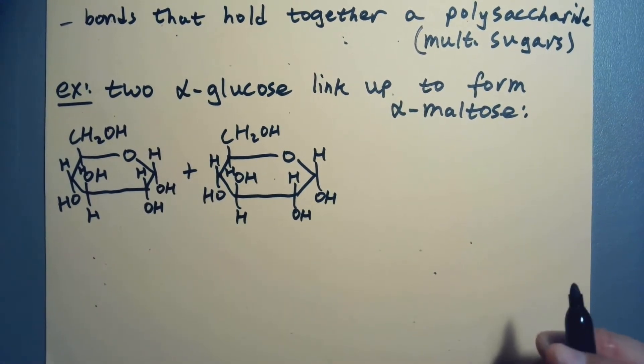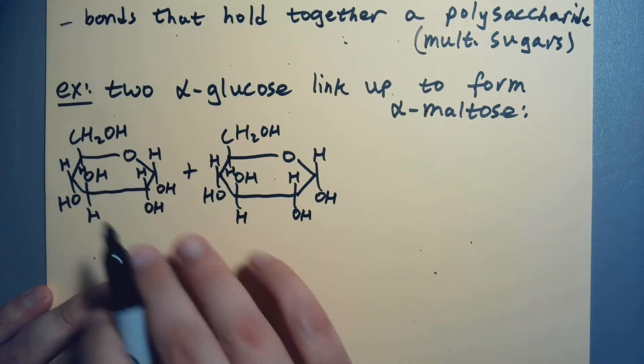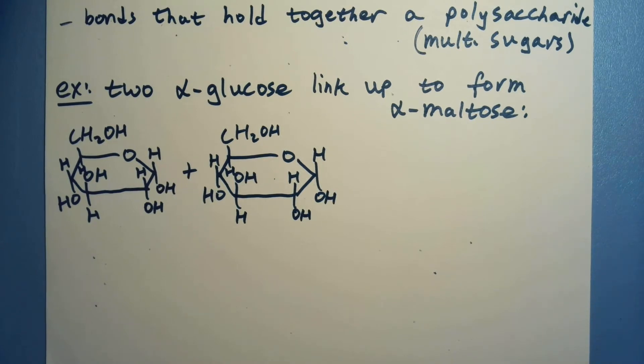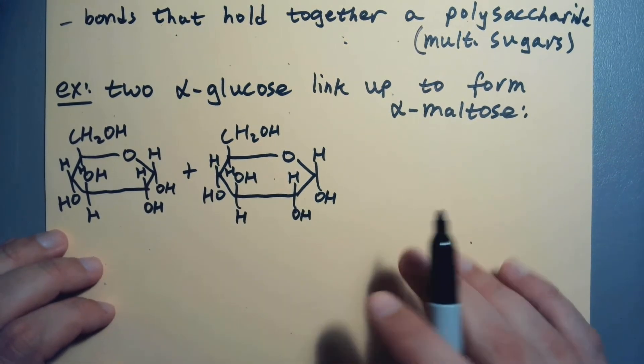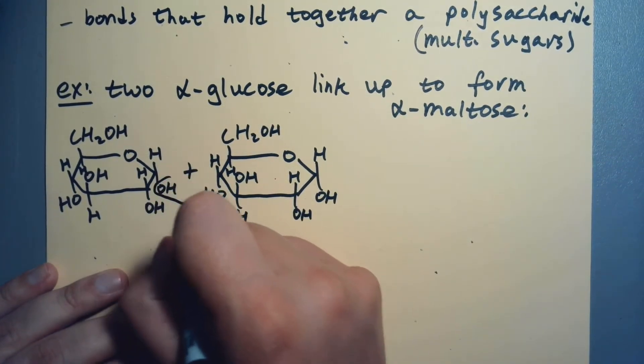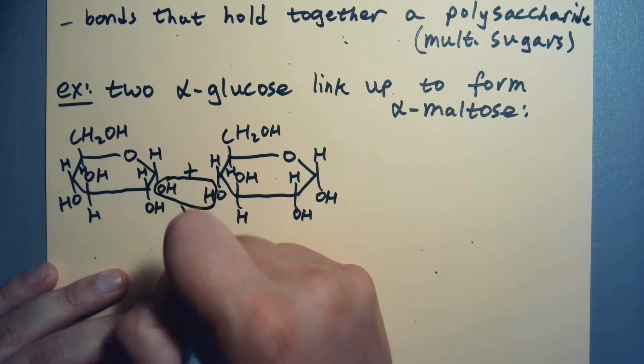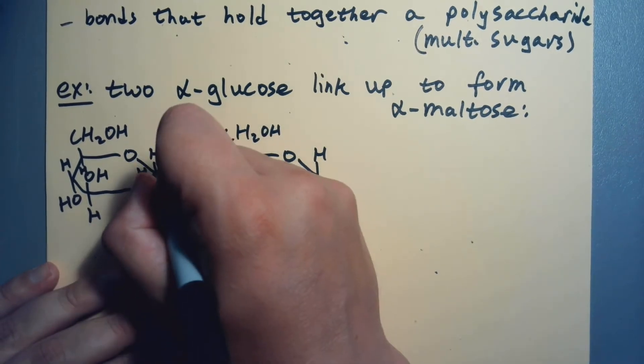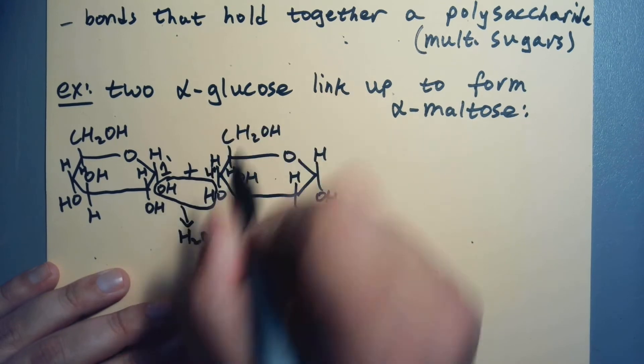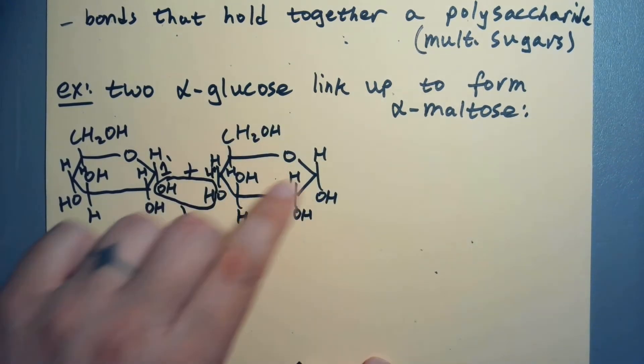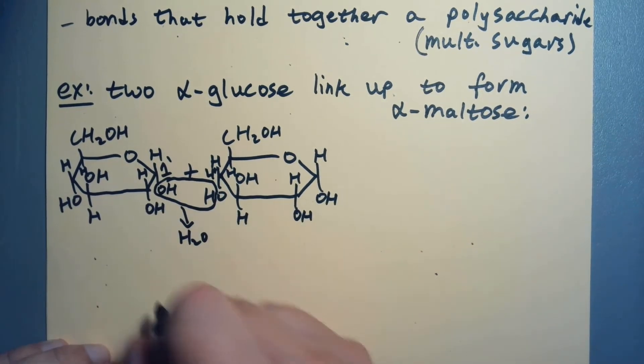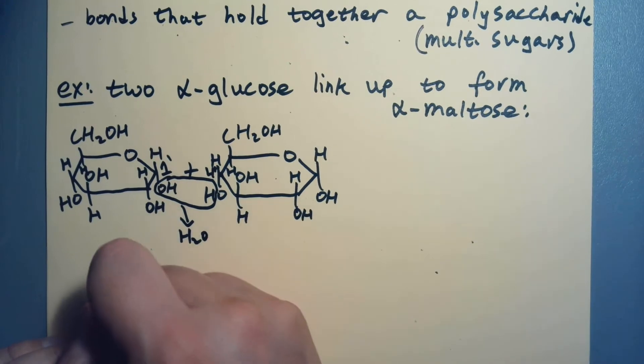And so what's going to happen is we're going to get a condensation reaction. So we're going to have an OH group. And I'm going to very carefully, how do I put this? So I'm just going to tell you which OH groups get used in this reaction. And we're going to go into more detail about that. And then, so I'm going to have a water form here. This OH group and this OH group are going to be used in the condensation reaction. So it's going to be between my one carbon and my four carbon. So draw my reaction arrow.